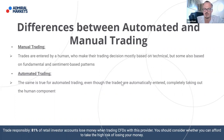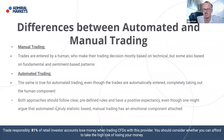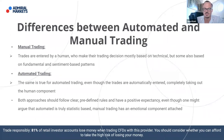Both approaches should follow — and in the case of automation, there is a clear predefined plan with clear rules that hopefully have a positive expectancy. Automated trading is truly statistics-based, while manual trading has an emotional component attached. In automated trading, you just follow the rules and don't really care whether the next trade is a winner or loser, because you know that over time, the edge you've identified — automated via an expert advisor — should result in a rising equity curve.